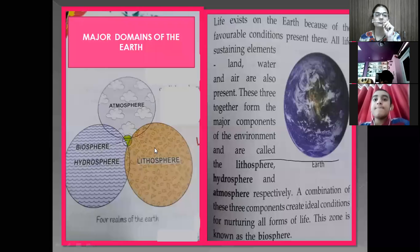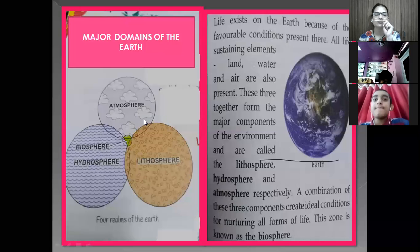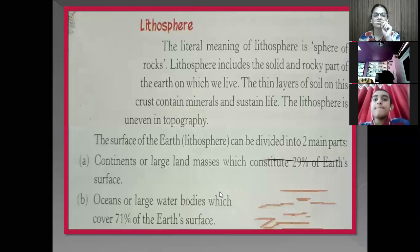Earth has four elements — lithosphere, atmosphere, biosphere and hydrosphere. These are the four elements of the earth because of which life is possible here. First, we go to the lithosphere. Lithosphere is the layer on which we live. Lithosphere literally means a sphere of rocks — if we break the word, it means a sphere of rocks.